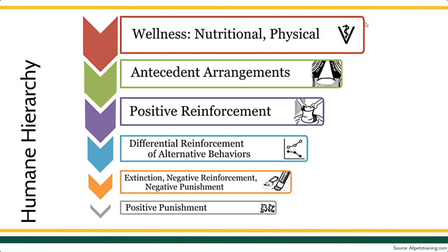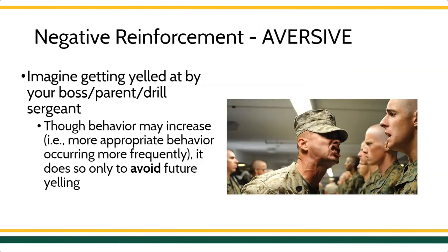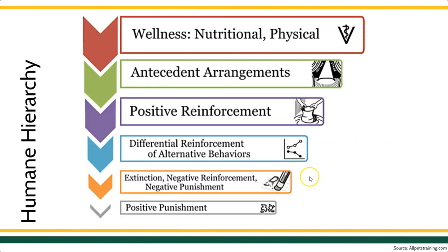Remember, the humane hierarchy refers to the level of intrusiveness of a procedure. This one is really misleading because it has the word 'reinforcement' in the title, and people think it must be a good thing. But actually, negative reinforcement is way down on the hierarchy alongside other behavior deceleration techniques like extinction and negative punishment. This is a very aversive procedure. If we're doing things to avoid getting in trouble, working to escape or avoid a noxious stimulus — you can see it's incredibly aversive. Because it is aversive control, there are a lot of drawbacks to negative reinforcement.